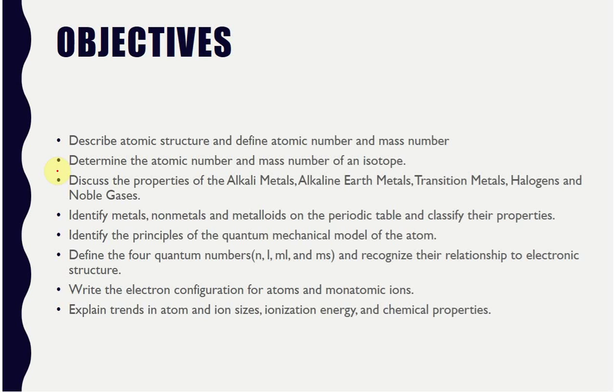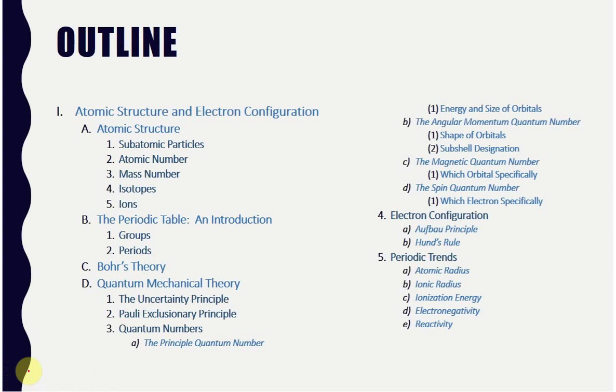And so here we're going to briefly identify metals, nonmetals, and metalloids on the periodic table. And then we're going to come back later and really get more detailed about the different groups there. So this is where we are right now.